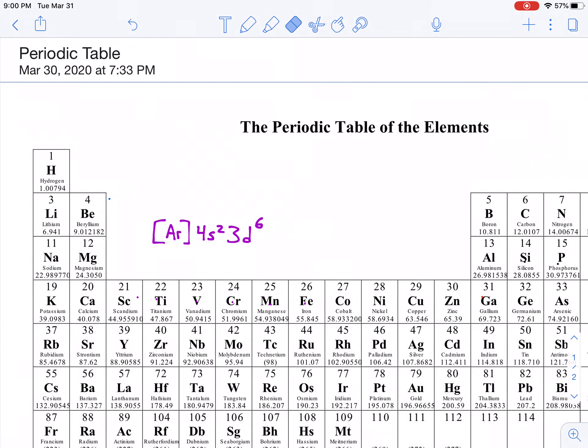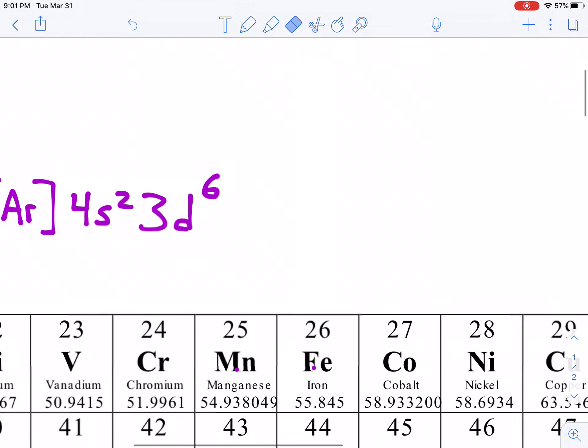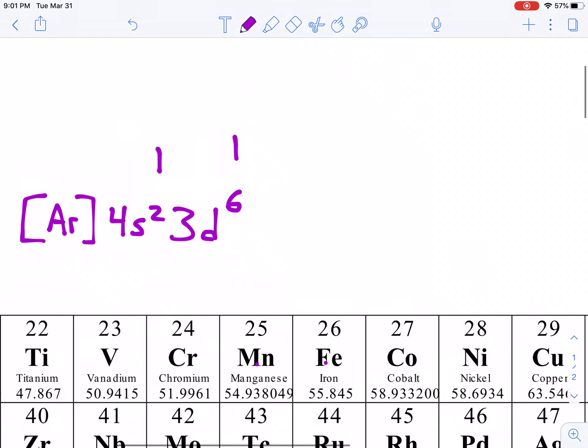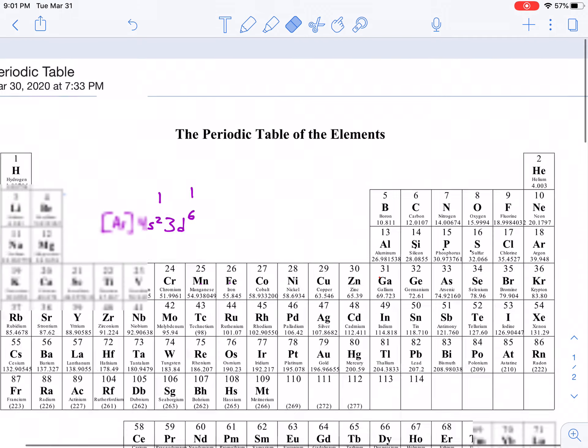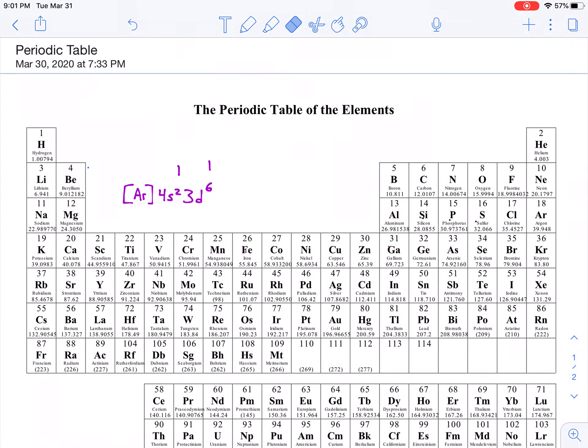You can still check your work, if you so desire, in this method by adding up your superscripts. Because if you do that, you'll take this 6 plus this 2 is 8 plus the number of electrons in argon, which is 18. So, 8 plus 18 is 26. And you'll notice iron is atomic number 26. So, it works.